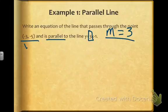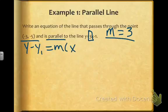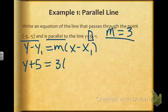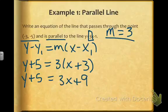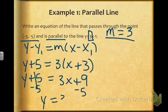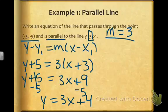Using point slope form: y minus y1 equals m times x minus x1. Plugging in the point and slope gives y plus 5 equals 3 times x plus 3, because minus a negative becomes plus. Distributing gives y plus 5 equals 3x plus 9. Subtracting 5 from both sides gives y equals 3x plus 4. So y equals 3x plus 4 is parallel to the line y equals 3x minus 1 — we know it is parallel and we used that point to find the equation.